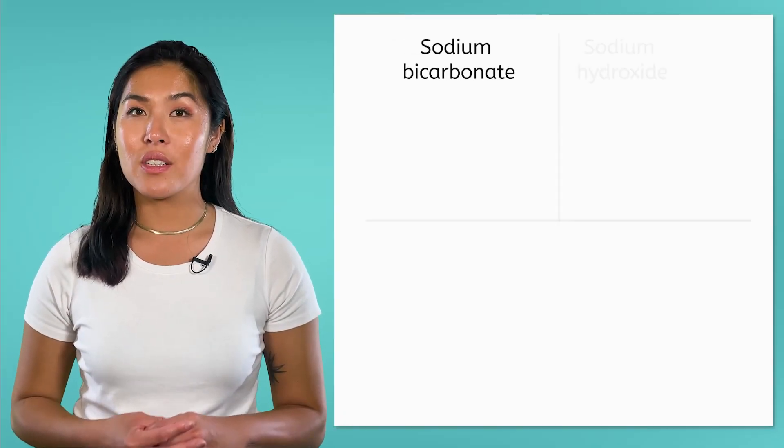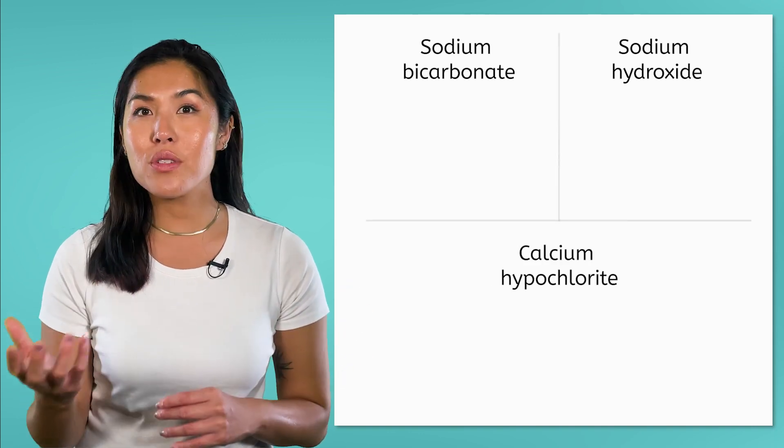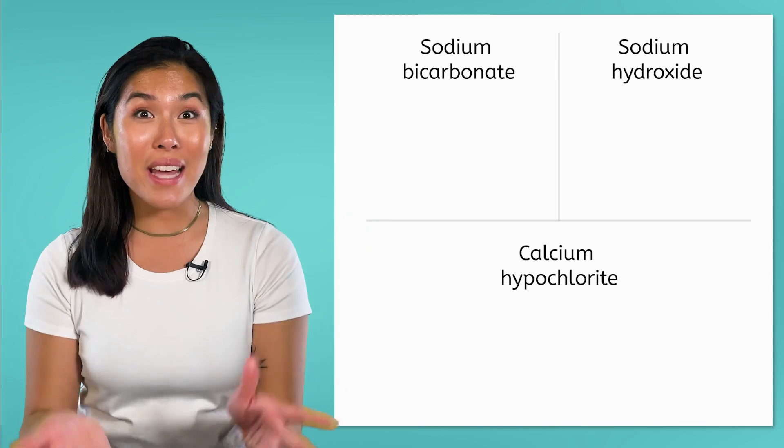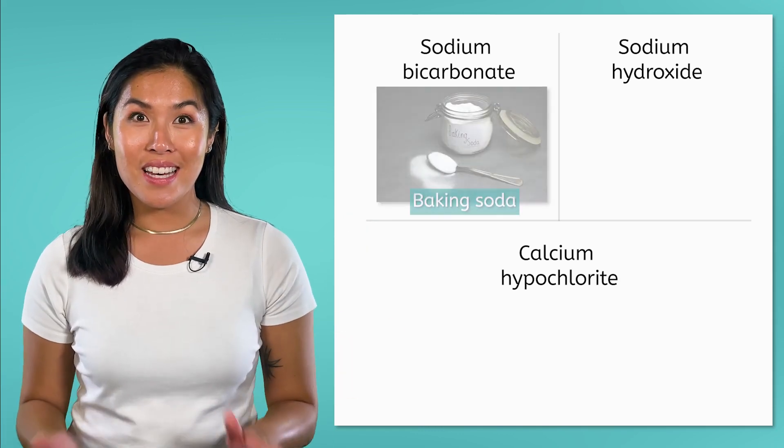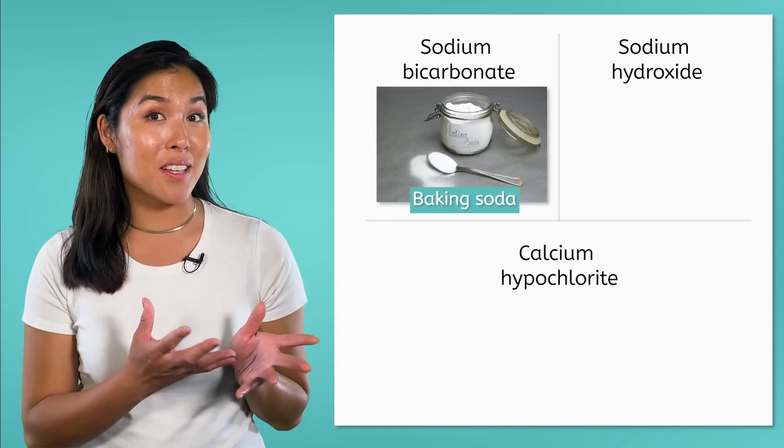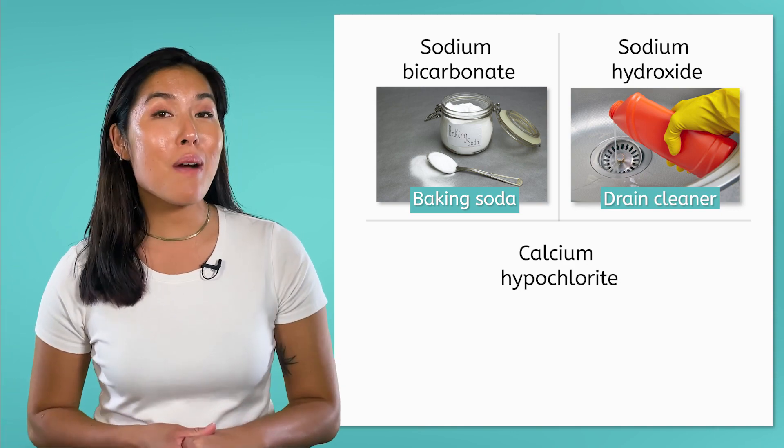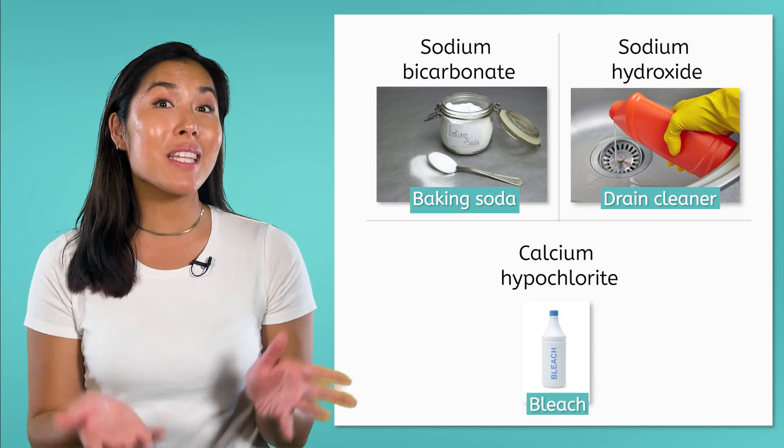Sodium bicarbonate, sodium hydroxide, and calcium hypochlorite. These are all bases that you might have in your house. Sodium bicarbonate is baking soda, sodium hydroxide is found in drain cleaner, and calcium hypochlorite is found in bleach.